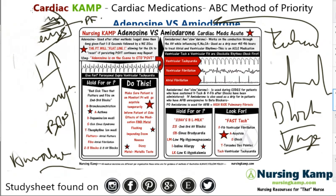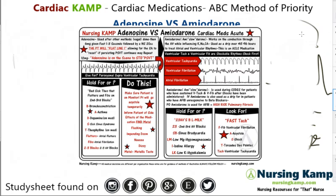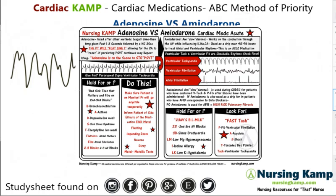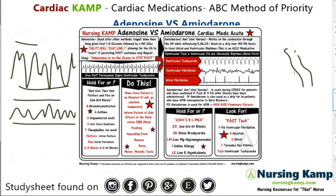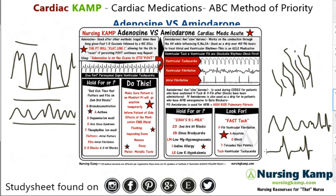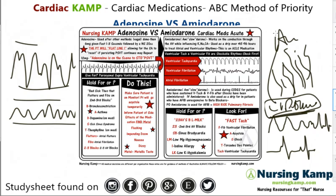Amiodarone is also given during ACLS — that's important to know because it is an ACLS medication. It's used for VTAC — ventricular tachycardia — and VFib — ventricular fibrillation. It slows down conduction through sodium, potassium, and calcium channels, and hopefully converts the rhythm. It's similar in some ways to lidocaine, which is still used, but amiodarone is antiarrhythmic and is given for ventricular rhythms. You'll see it in ACLS algorithms.